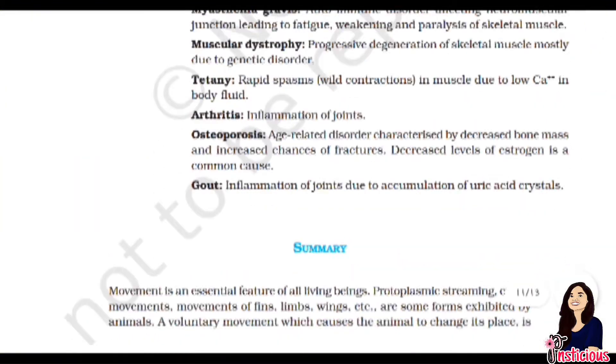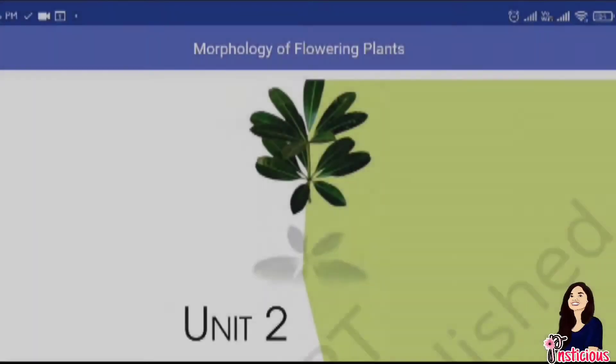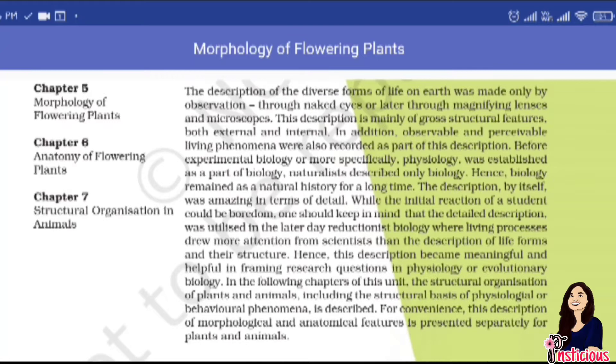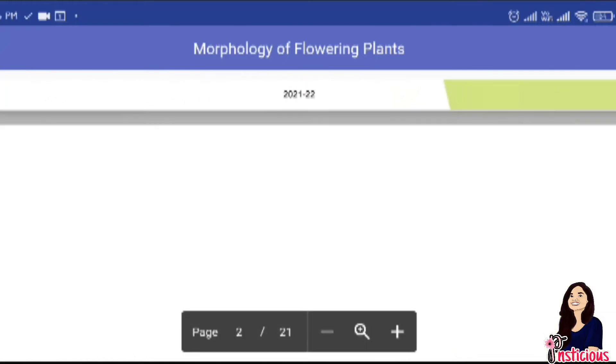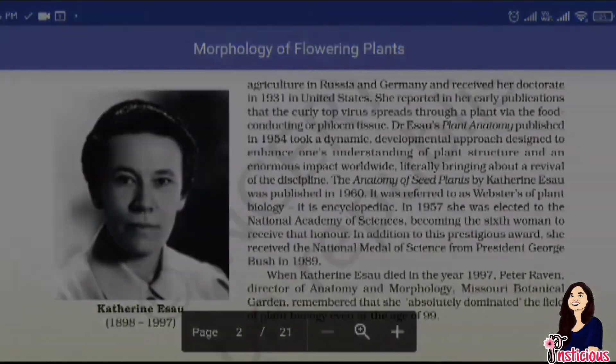Again, you have to complete the question answers as well. The second chapter of the biology section is morphology of flowering plants. This chapter is from class 11th biology, and in this chapter you are given very easy and theoretical concepts. So understand all these things and solve the question answers by noting them down.